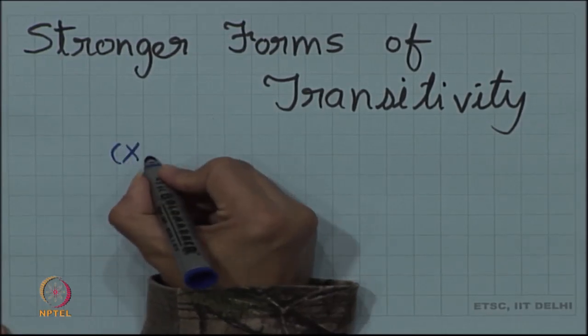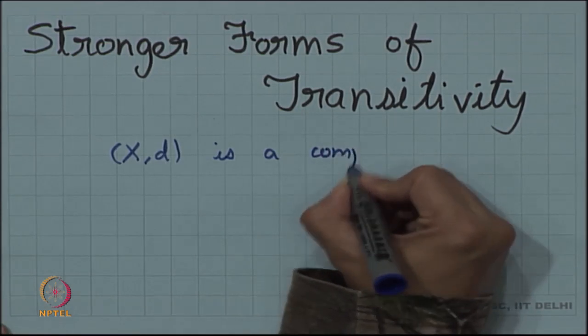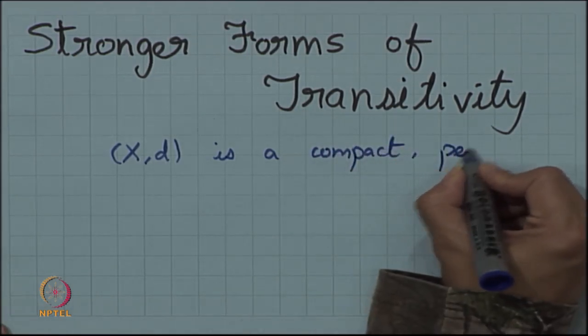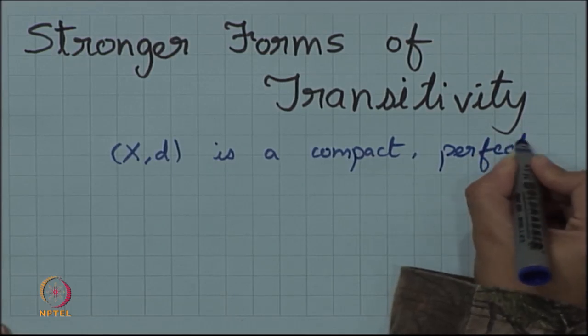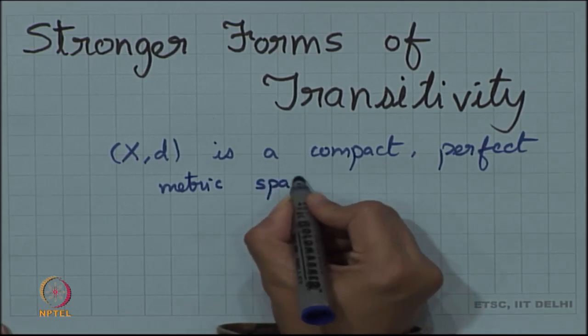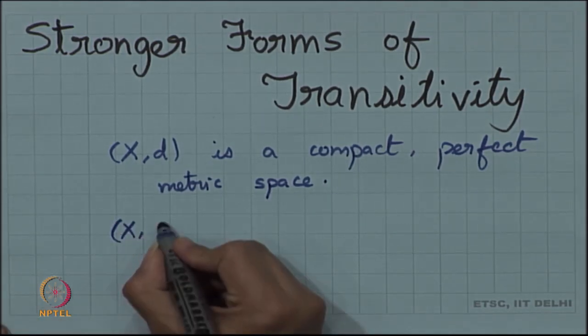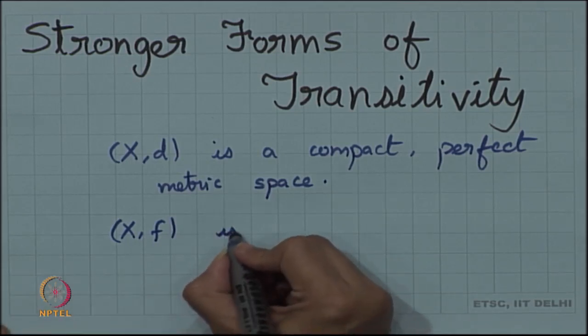Welcome students. Today we will be looking into stronger forms of transitivity. Our assumption is that X is a compact metric space, and not just compact but also perfect, so that we are avoiding any isolated points. This is our compact perfect metric space, and our dynamical system is XF.